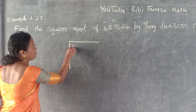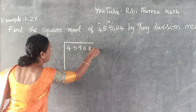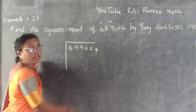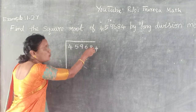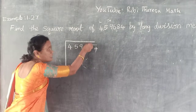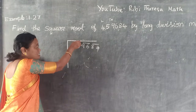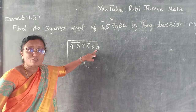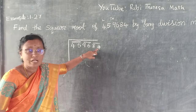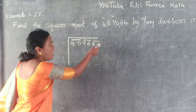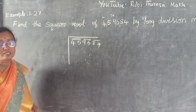Just write the number. Understand? From the last — from the units place — you have to draw a bar for two digits. How many digits? Two digits. Next, two digits. Next, two digits. From which place you have to start? From the units place. How many digits you have to take? Two digits.